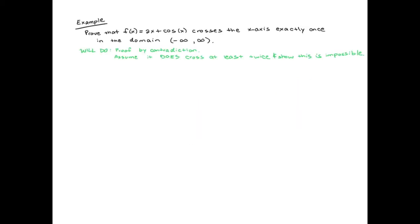We are going to prove that f(x) = 2x + cos(x) crosses the x-axis exactly once on the domain from negative infinity to positive infinity. Rolle's Theorem applies on an interval [a, b] — continuous including endpoints, differentiable not including endpoints. The interval given to us is not the one where we apply Rolle's Theorem; we have to figure out the interval ourselves. What we're going to do is a proof by contradiction. If it crosses exactly once, it can't be twice or three times. So let's assume it crosses at least twice and show that this is impossible.